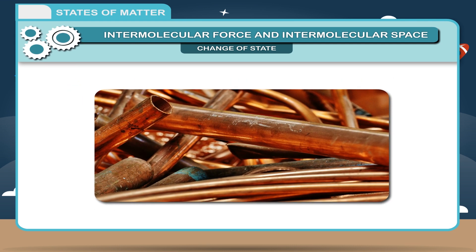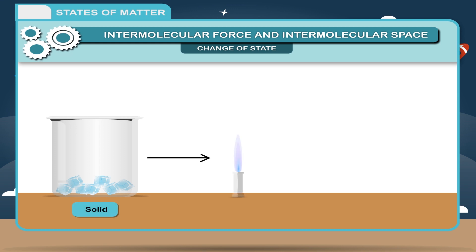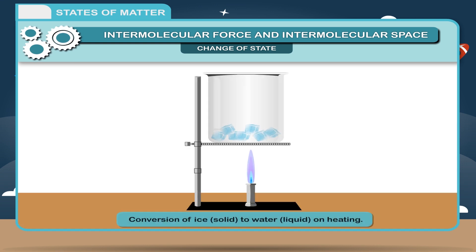Melting. Conversion of solid into liquid on heating is called melting. Example: Conversion of ice (solid) to water (liquid) on heating.